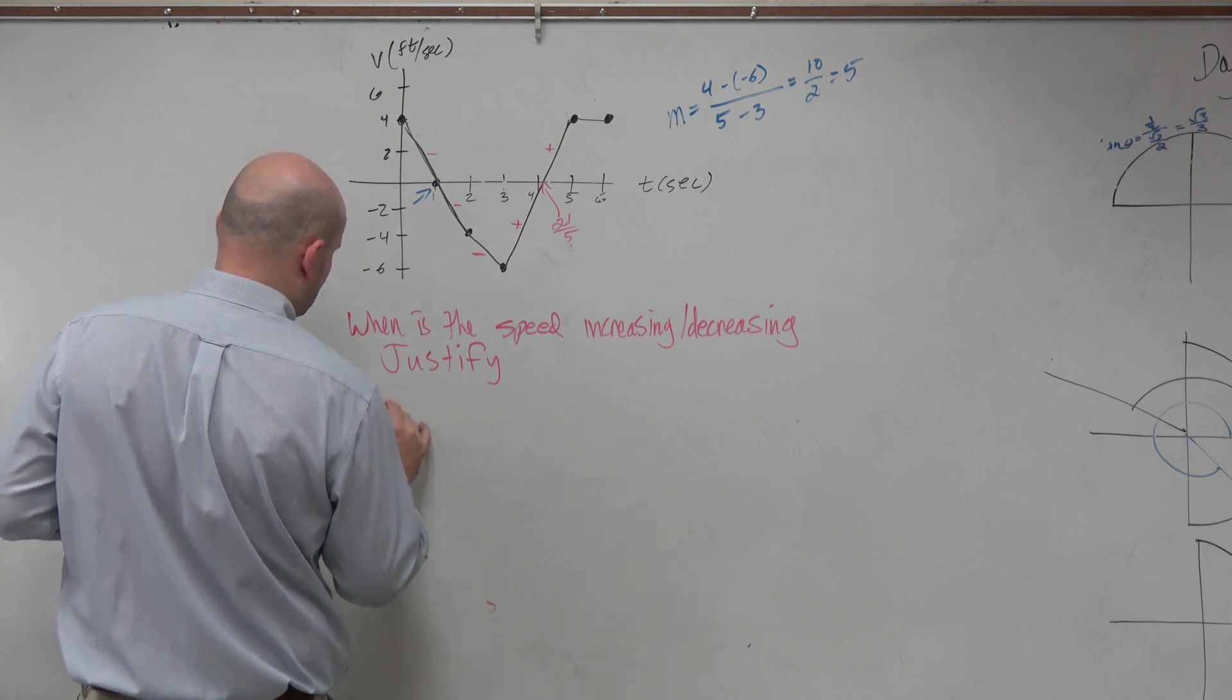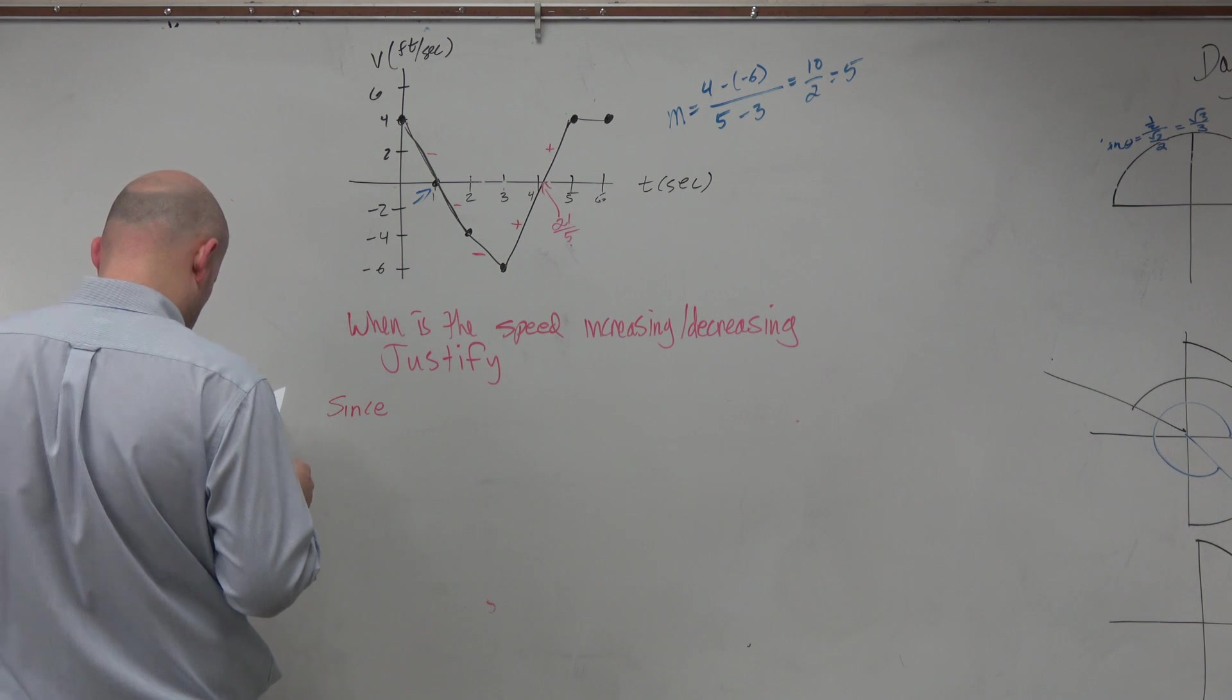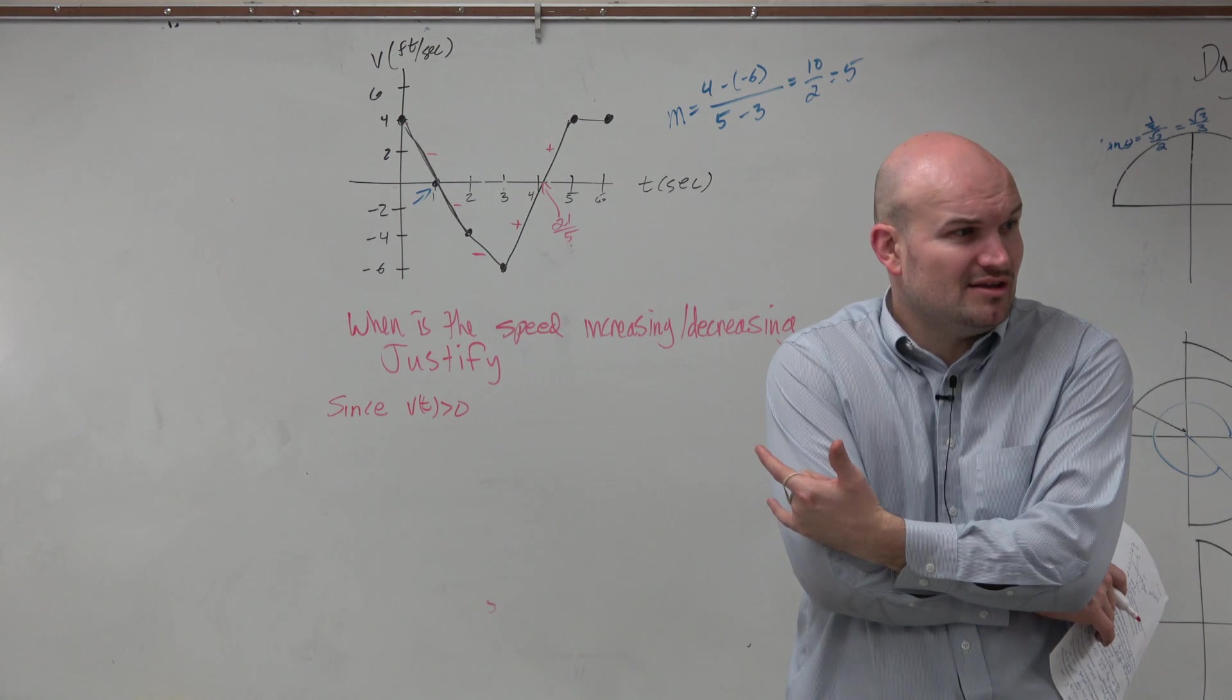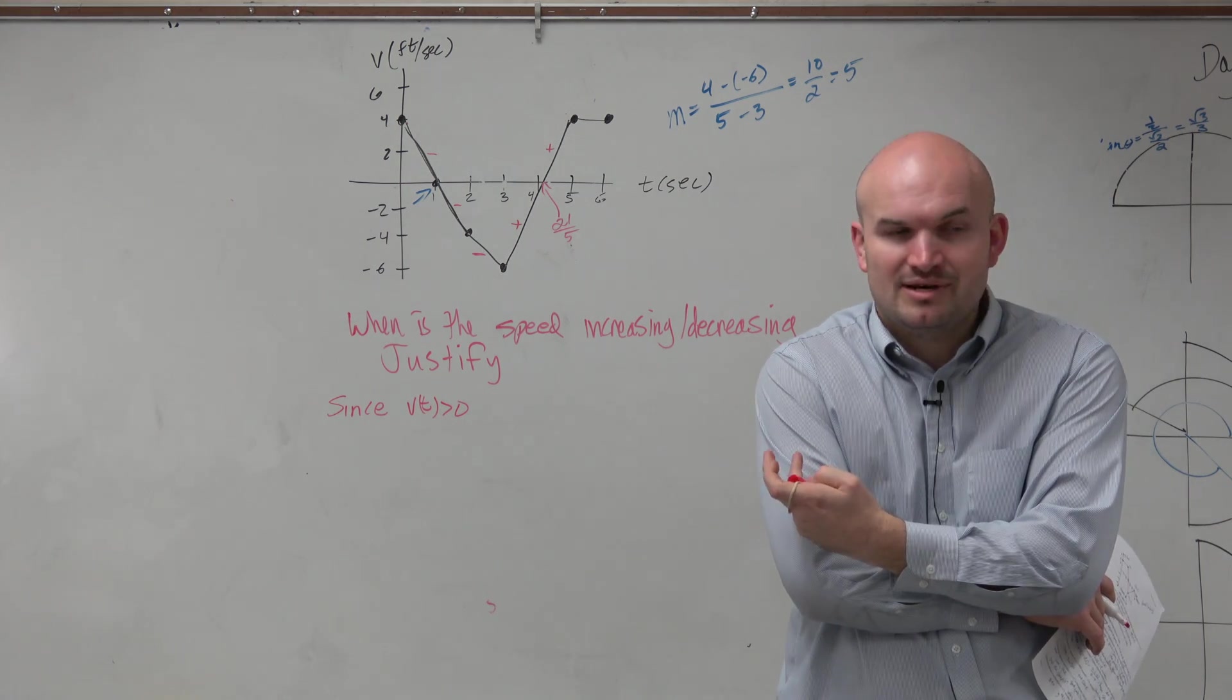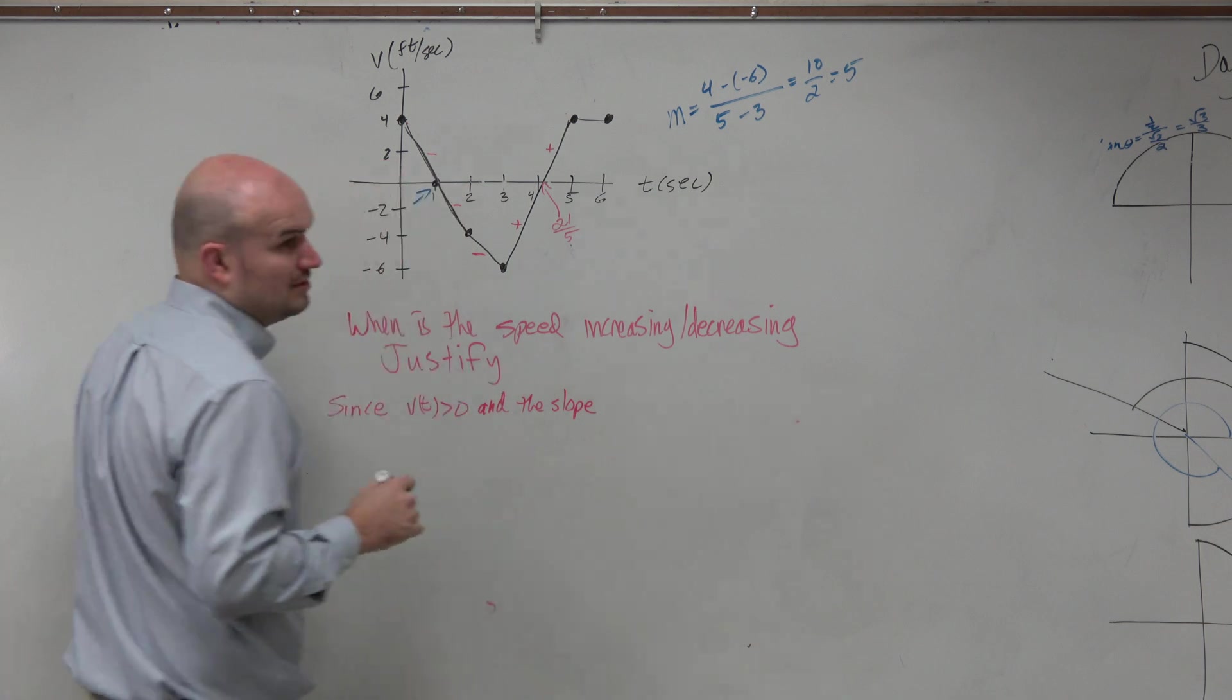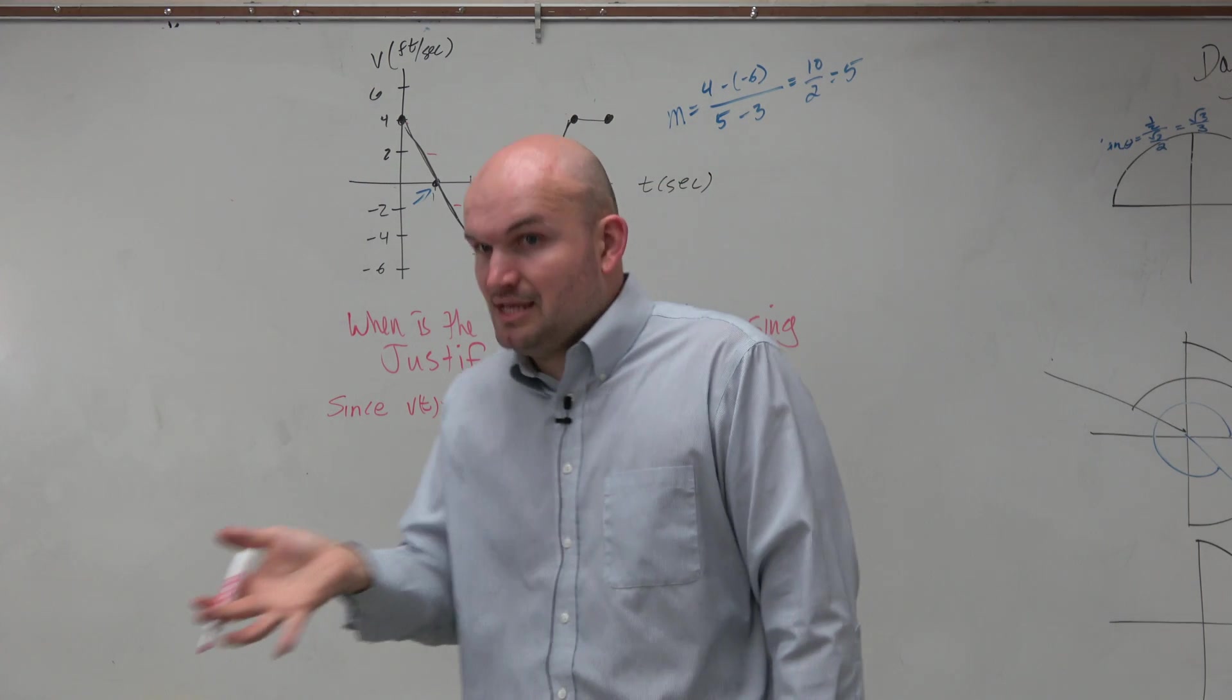So what we want to do is say since v sub t is greater than 0. Now should I say a sub t is greater than 0, should I say the acceleration is greater than 0? Just shake your head. Do not refer to acceleration. This is the velocigraph. So what you could say is since v sub t is greater than 0 and the slope of v sub t is increasing, you guys see how that makes sense? So you can talk about the slope but talk about the slope, don't talk about the acceleration.